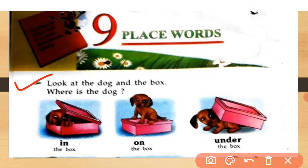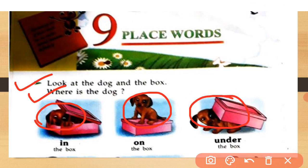Look at the dog and the box. A picture of a box and dog is given. Where is the dog? In the first picture, the dog is in the box. In the second picture, the dog is on the box. In the third picture, the dog is under the box. So in, on, under — these are prepositions or place words. They tell us about the noun's position. The noun is 'dog', and the words in, on, under tell us where the dog is.